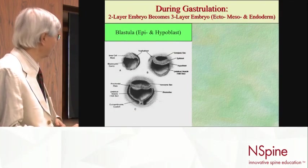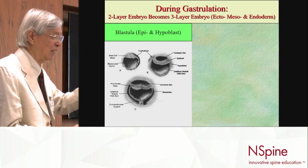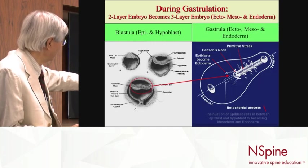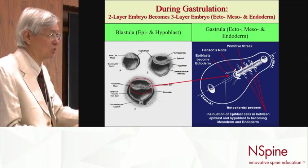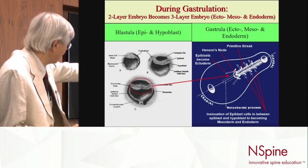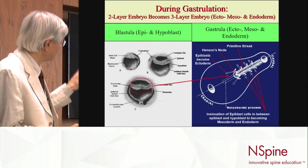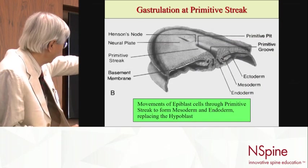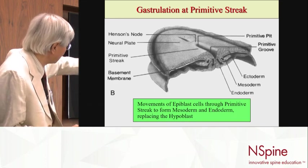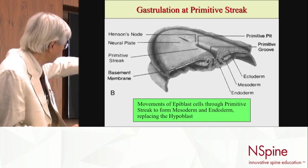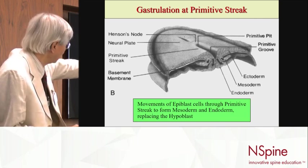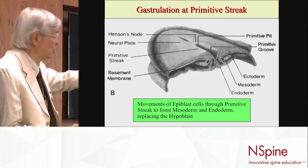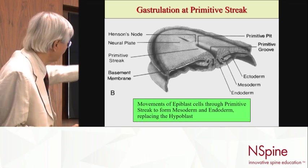Gastrulation is when the embryo starts off as a bilaminar disc, meaning the epiblast and the hypoblast, and it changes into a three-layer embryo consisting of the ectoderm, mesoderm, and endoderm. During that process, the epiblastic cells slide to the midline through a structure called the primitive streak, go inside, and start replacing tissues from deeper layers to form three levels: the endoderm facing the yolk sac, the middle mesoderm, and the most superficial ectoderm.